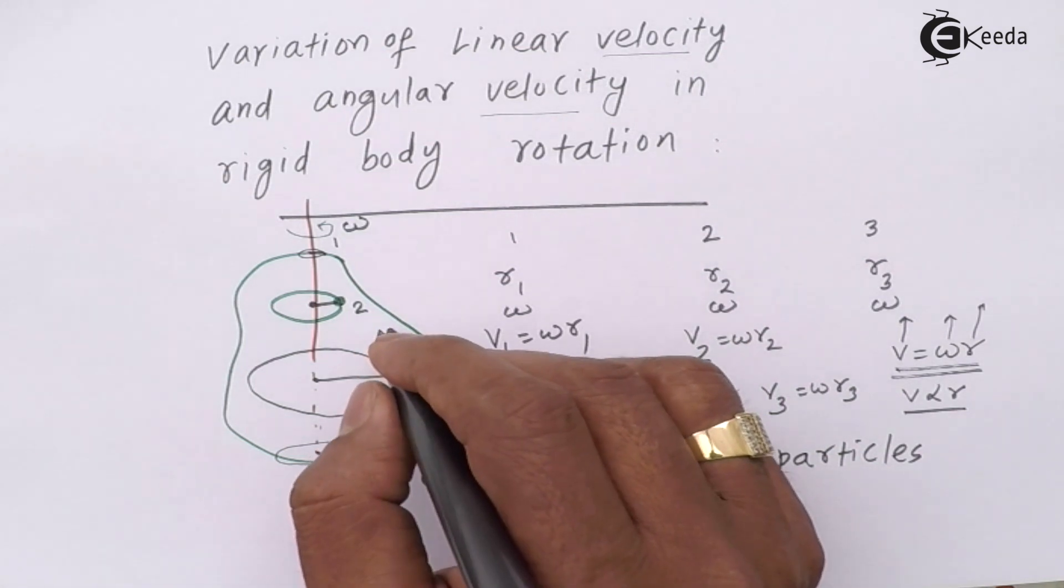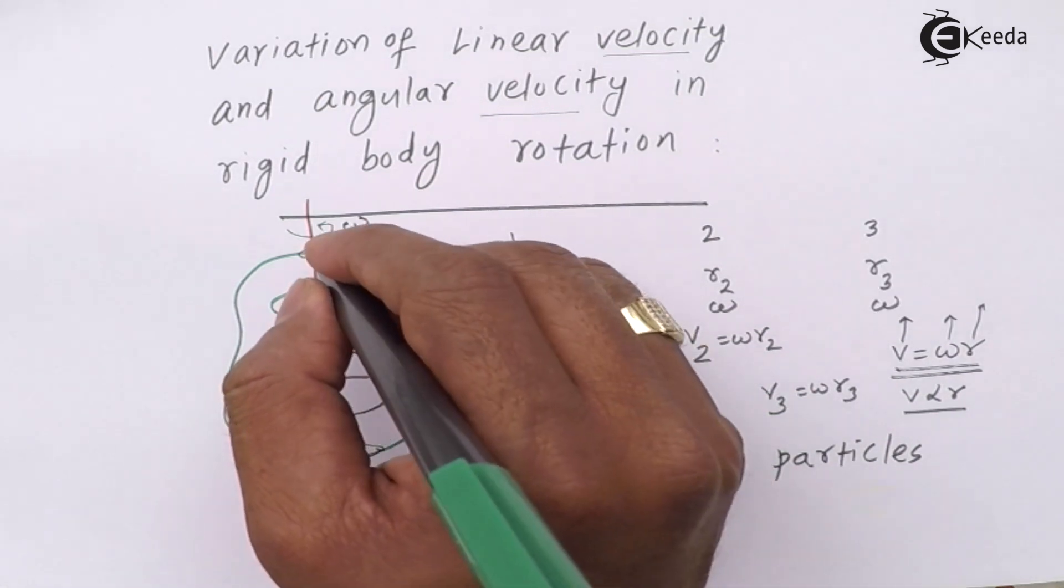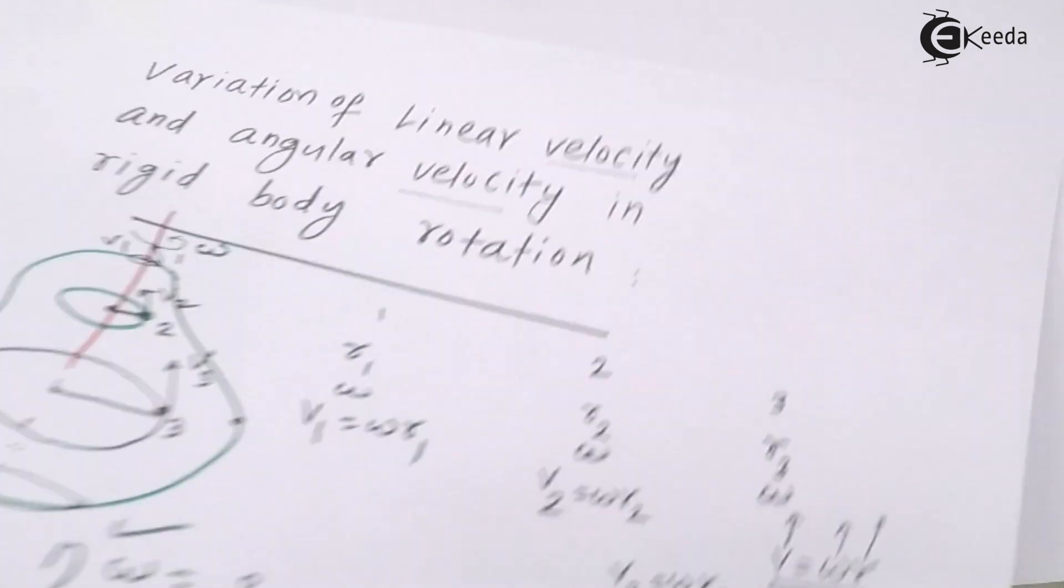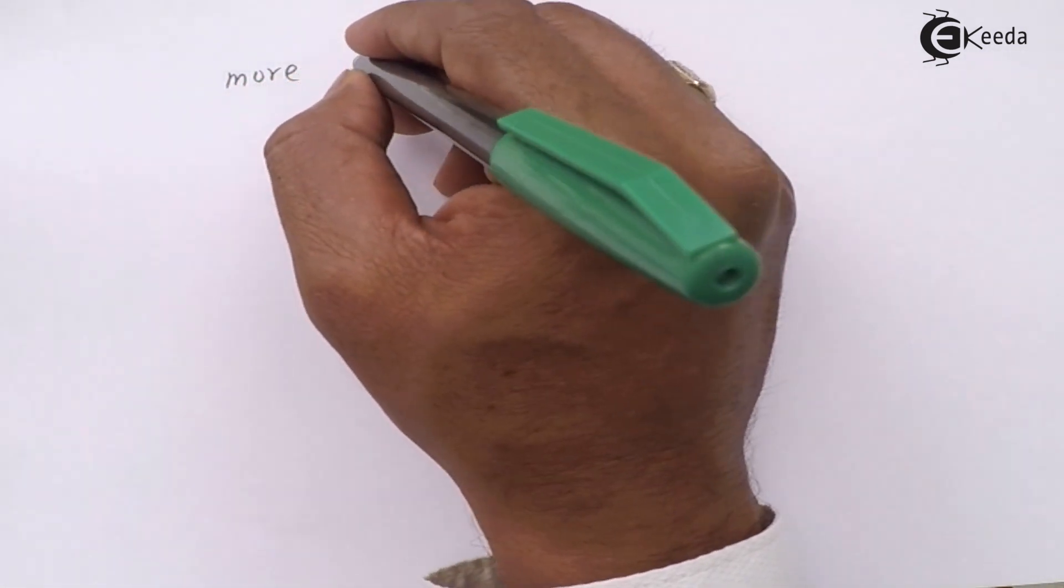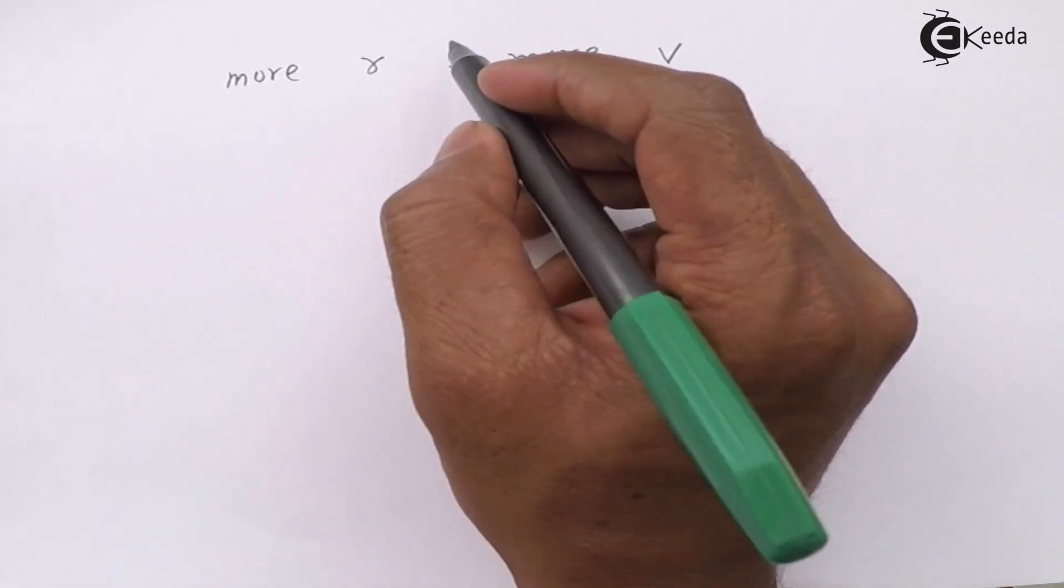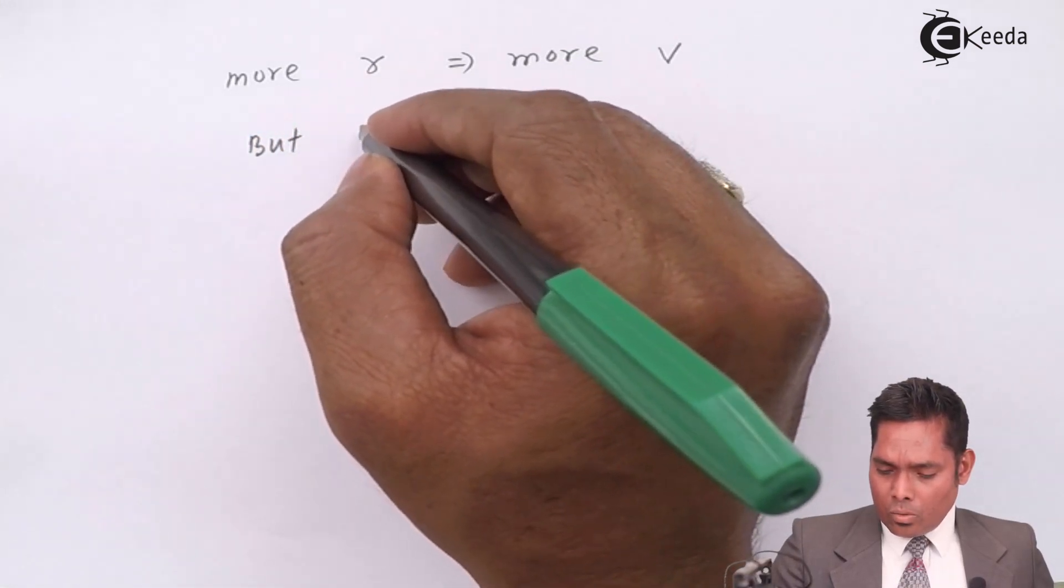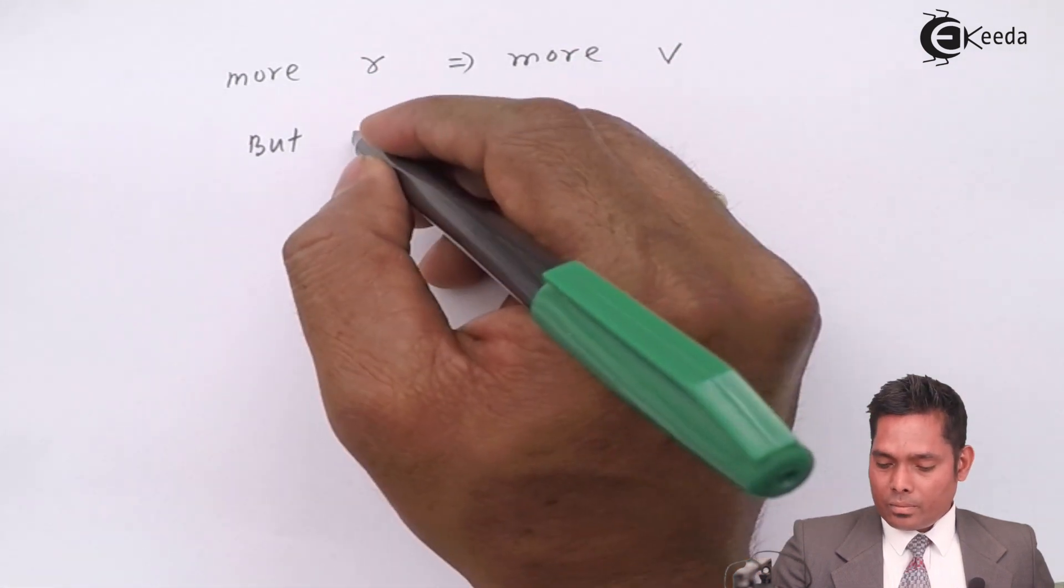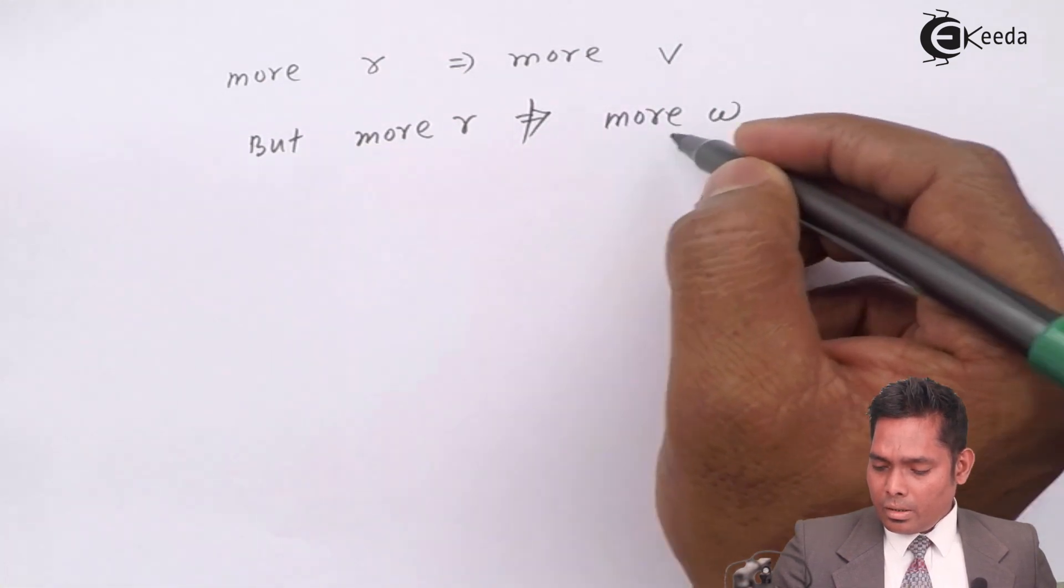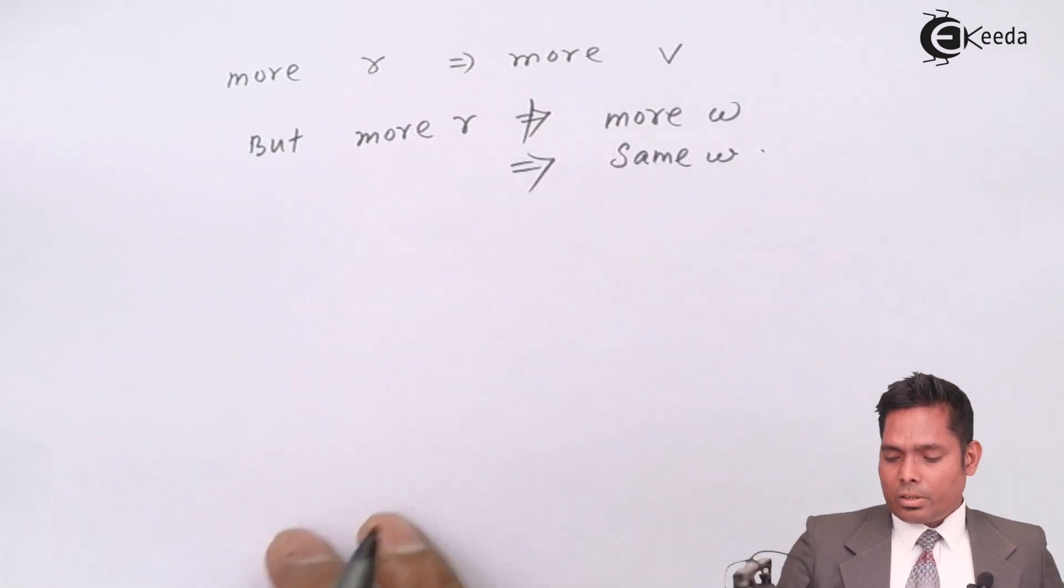That means the particle which is lying away, more and farther away from the axis of rotation, will have to have greater speed. So this is what is the conclusion from this concept: more r implies more of linear velocity. More r implies more v, but more r doesn't imply more omega. More r implies same omega. This is what you have to understand.